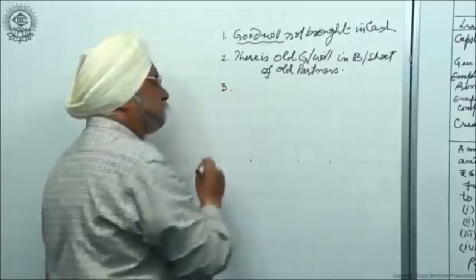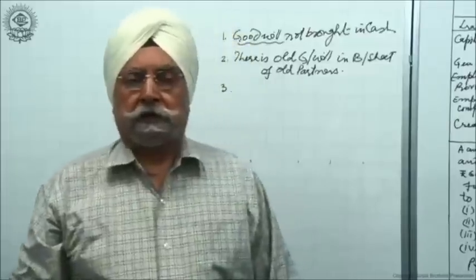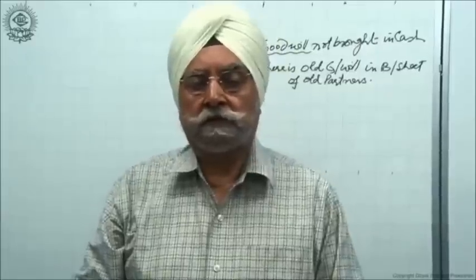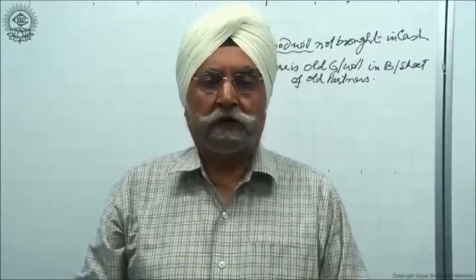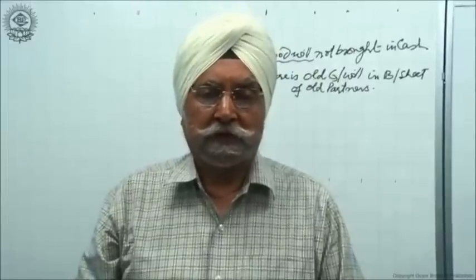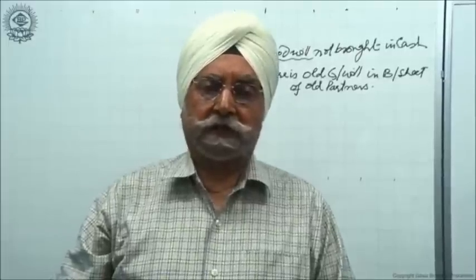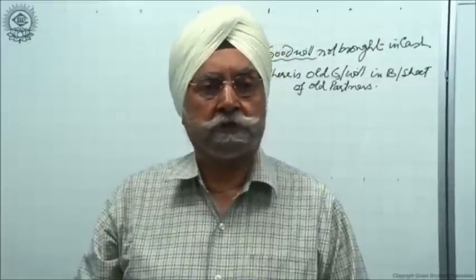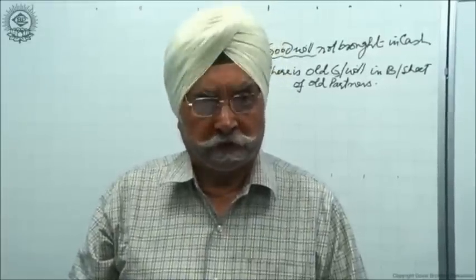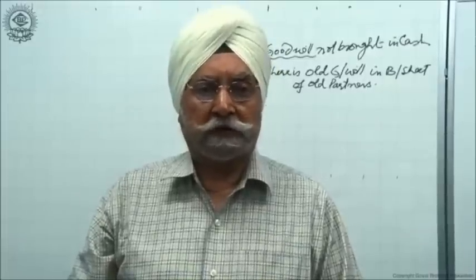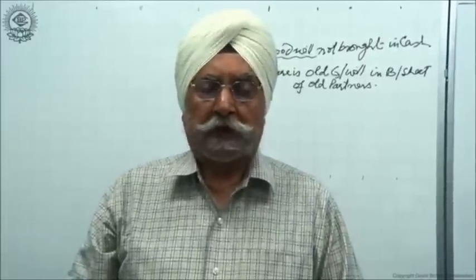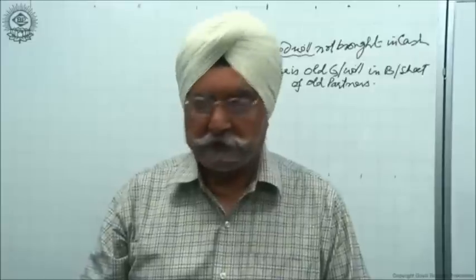The third condition is that the balance sheet contains an item called Workers' Compensation Fund or Employees' Compensation Fund. The old partners have created this fund out of their profits to meet any contingency arising from an accident that happens to workers while they are working in the factory. Any compensation payable to that worker would be met from this fund. This compensation fund appears in the old balance sheet on the liability side — how it is to be treated will also be discussed today.